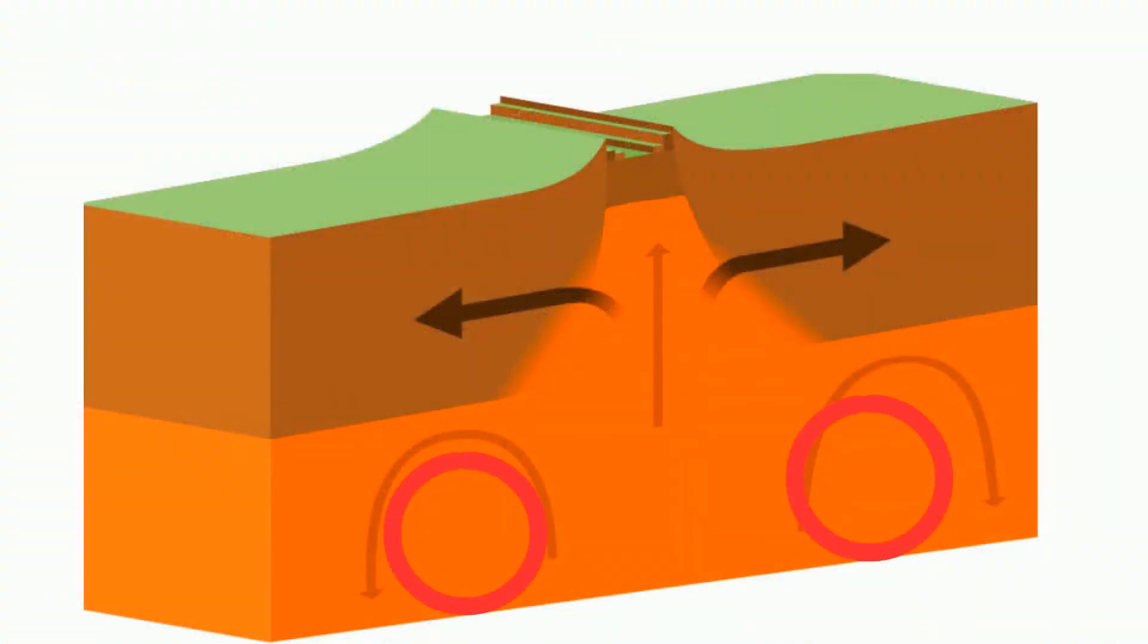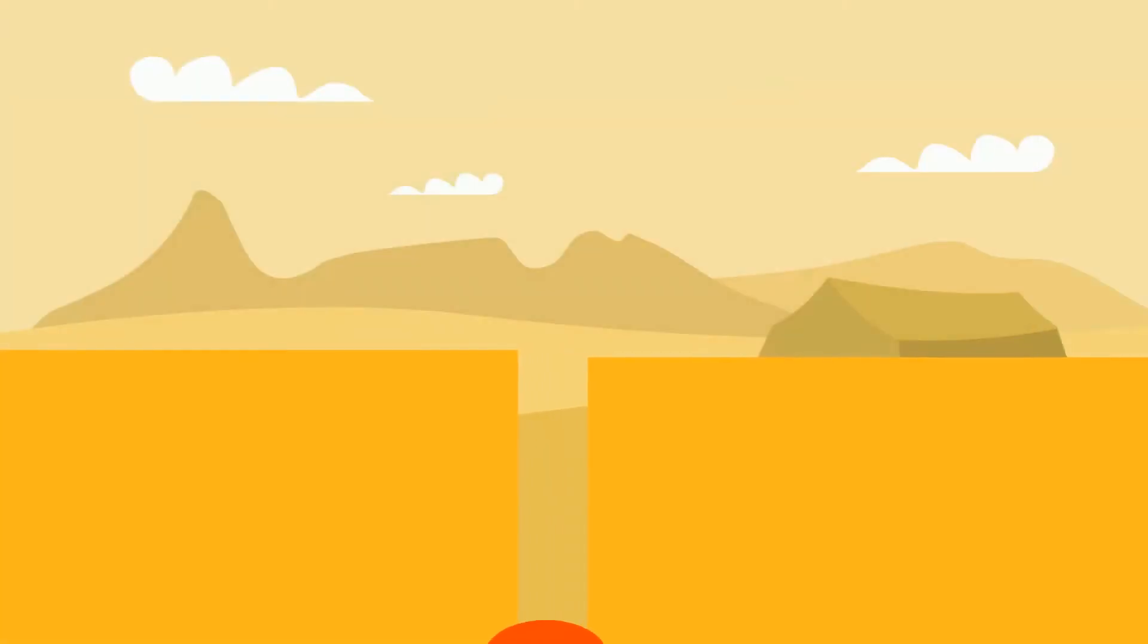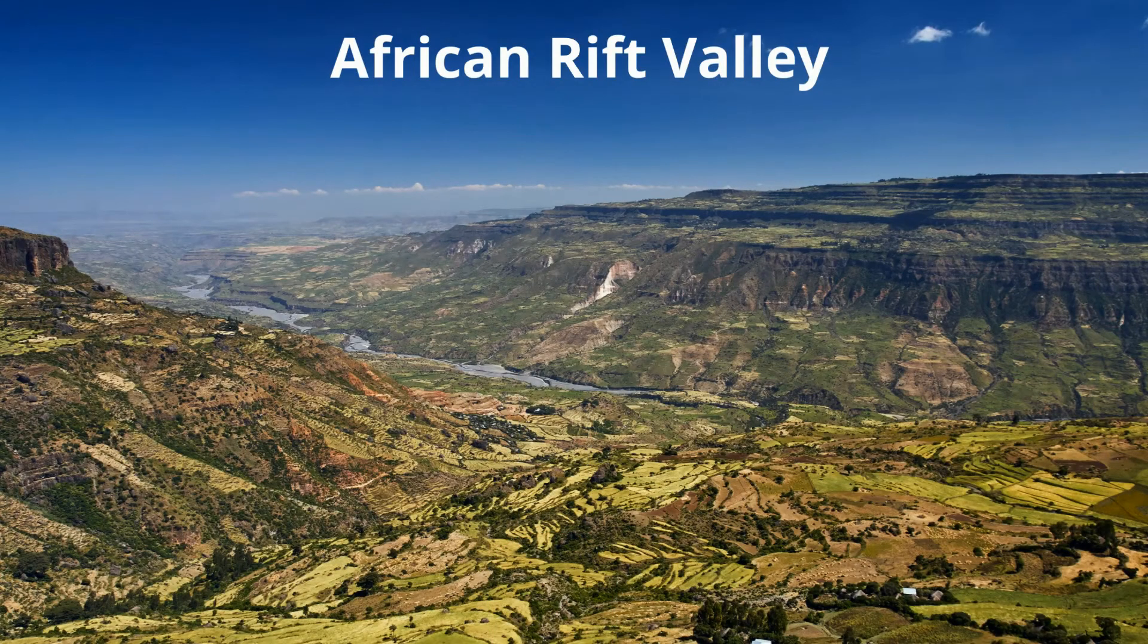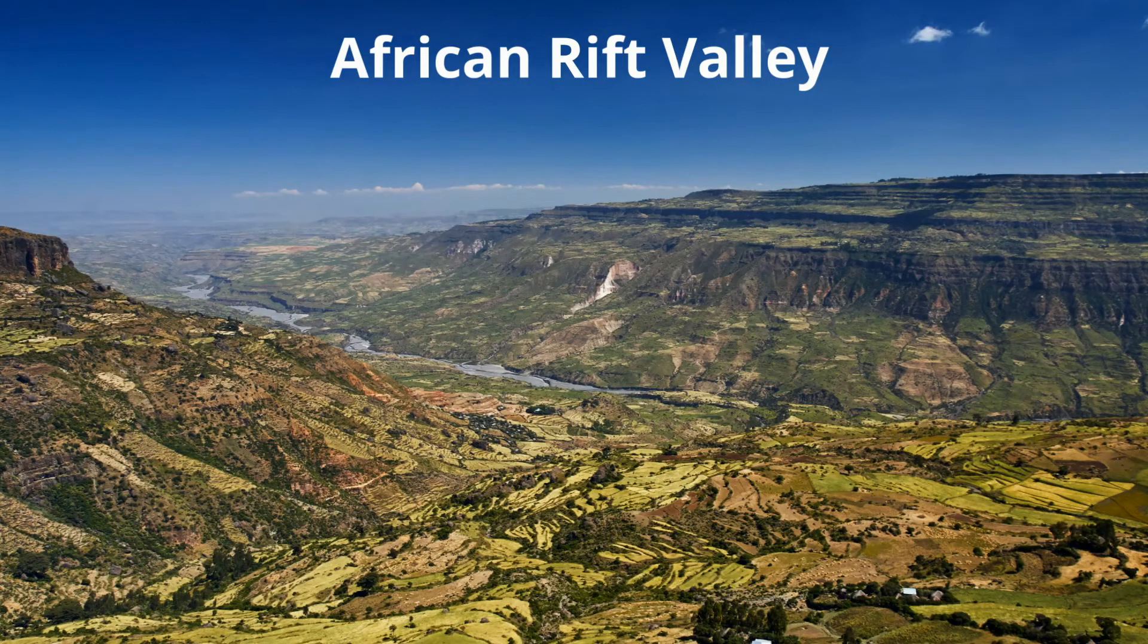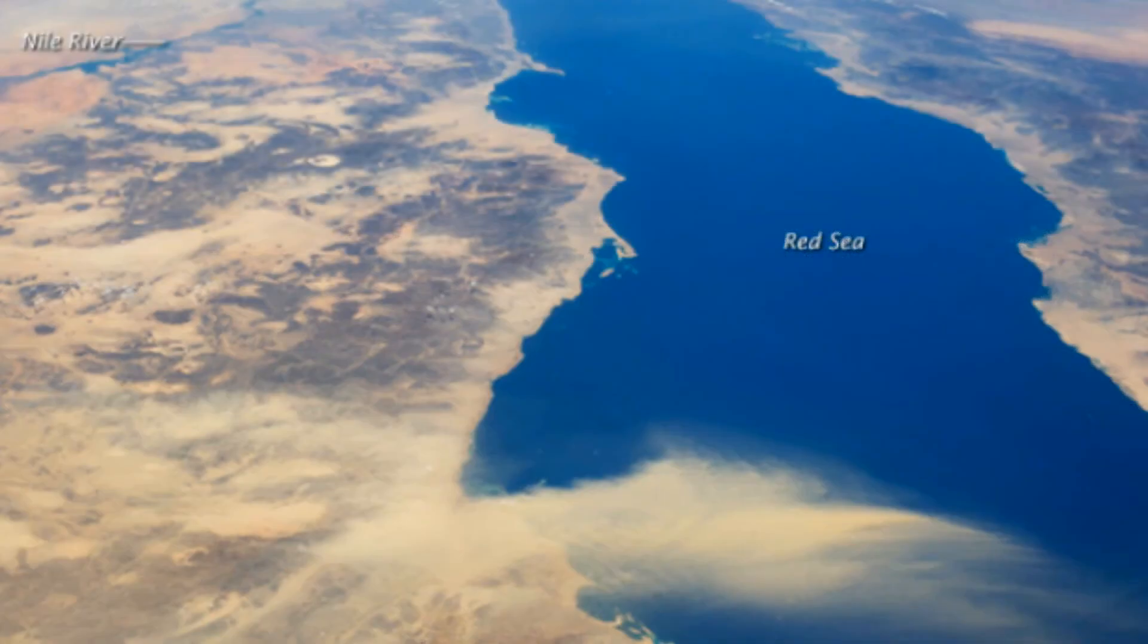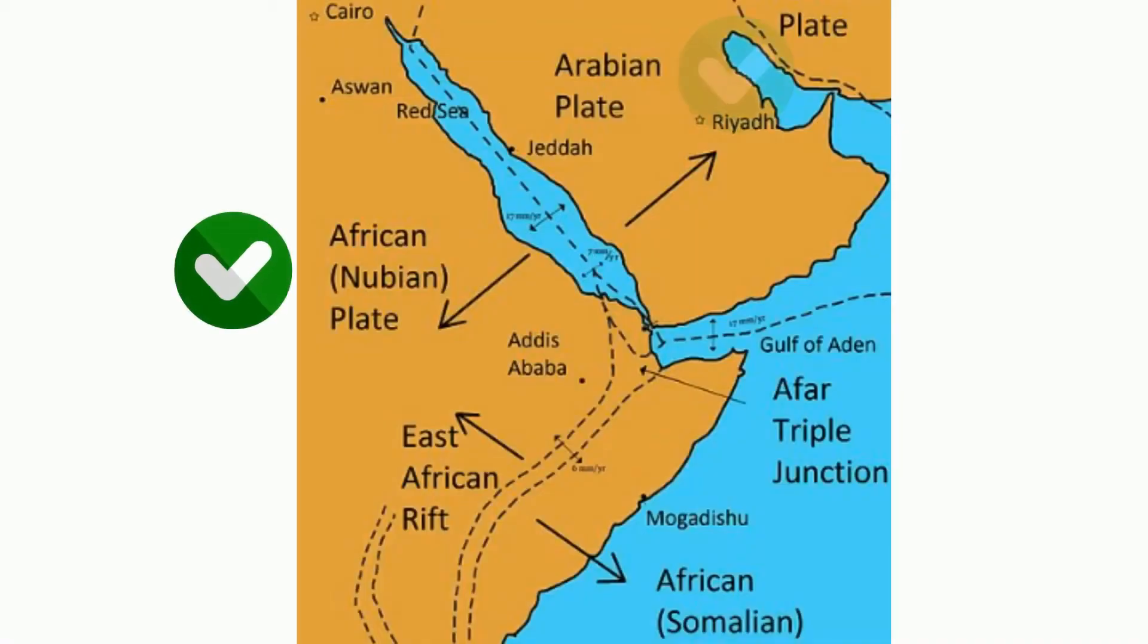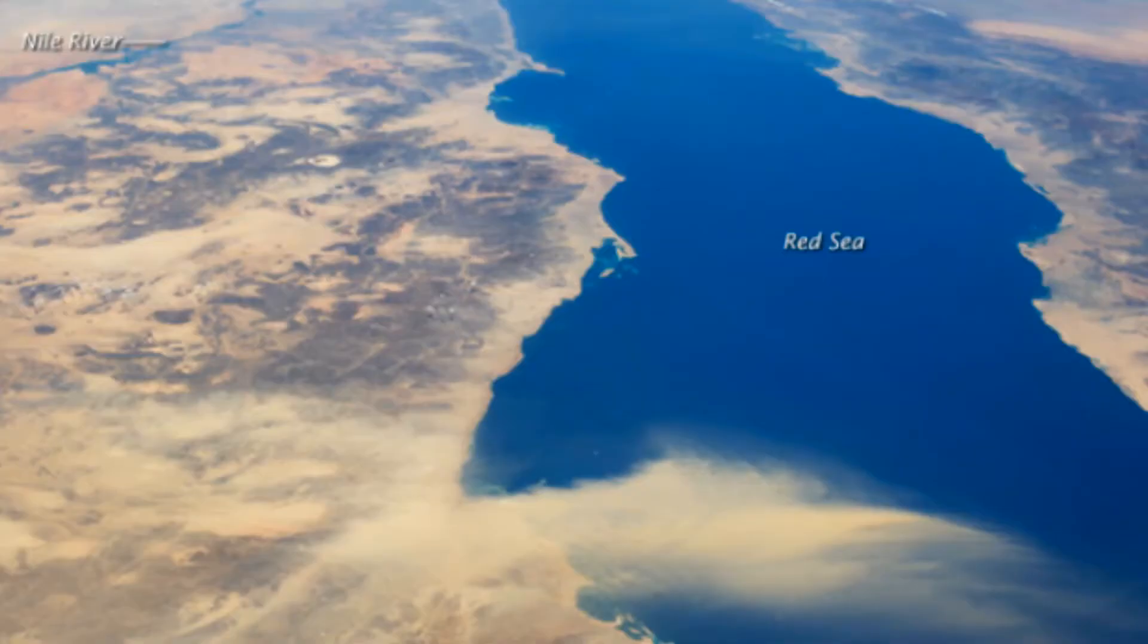Continental and continental divergent boundaries occur when two plates of continental lithosphere move away from one another. As the magma rises, new lithosphere is created. The East African Rift Valley was created when continental and continental divergent boundaries move away from each other. The Red Sea is another example. The Red Sea was formed by the divergence between the African plate and the Arabian plate. The rift transitioned eventually from a continental and continental to a continental and oceanic plate boundary.